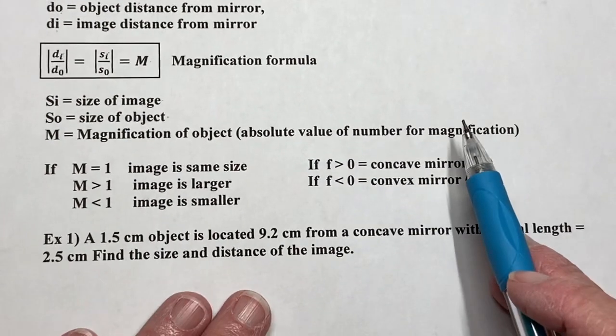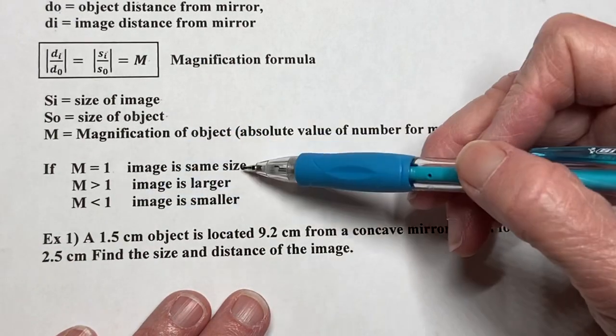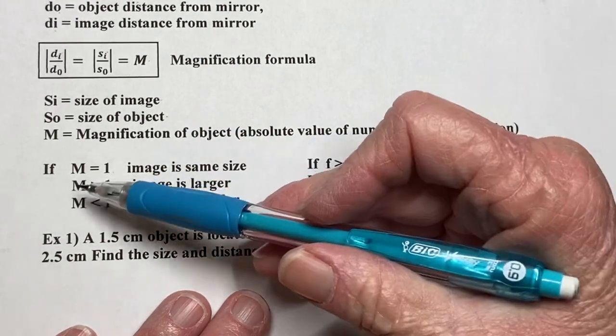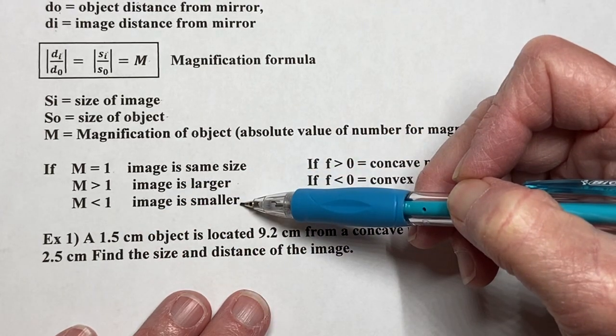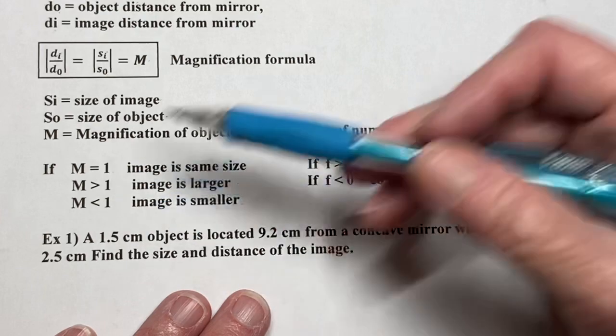So some things to know. If magnification equals 1, an image is the same size as its object. If it's greater than 1, it's bigger. And if it's less than 1, it's going to be smaller. And again, these will be all absolute values.